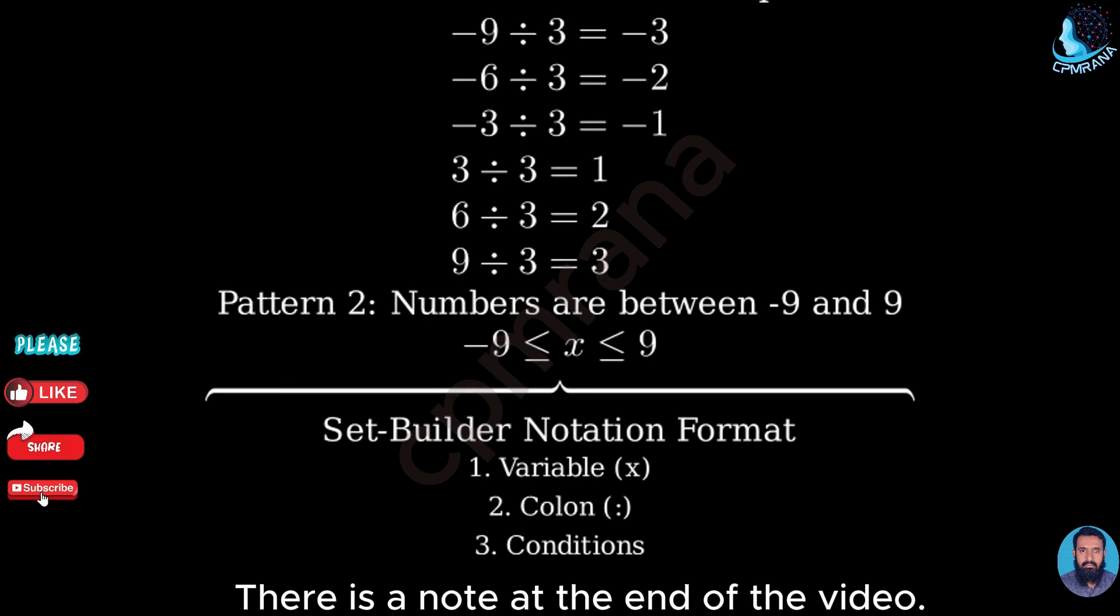Therefore, we can write our set C as C equals the set of all x such that x is a multiple of 3, and negative 9 is less than or equal to x is less than or equal to 9.